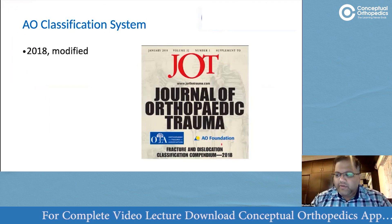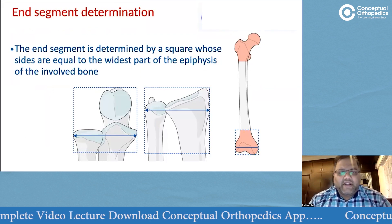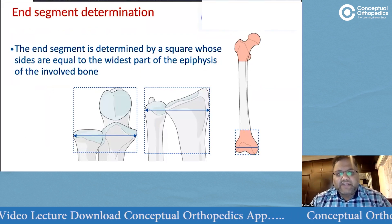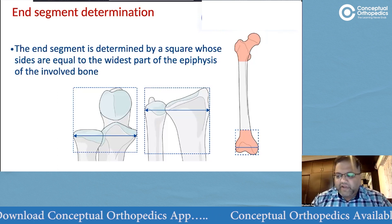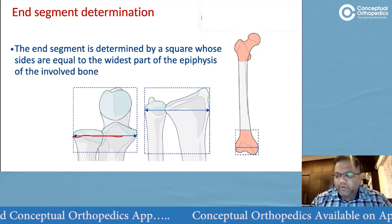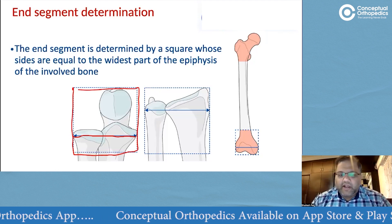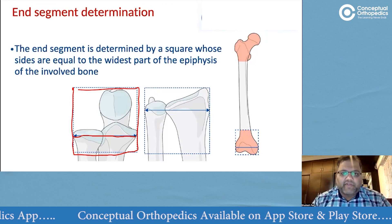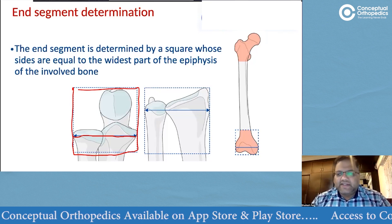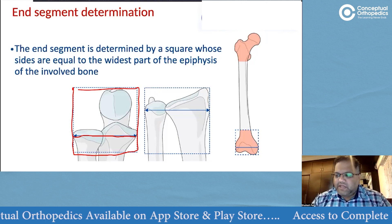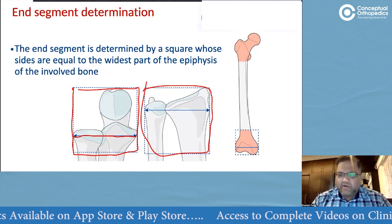We are talking about the articular segment — specifically, what we call the 'end segment.' It is not articular only. We define the end segment by taking the maximum width of the bone, drawing a square with that as the diameter, and whatever fracture falls within this zone is considered an end segment. Similar squares are used for the distal and proximal ends.